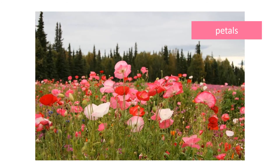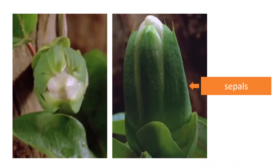It all starts with the petals. When the plant is still in bud, the petals are protected by leaf-like structures called sepals, and the petals burst through the sepals when the flower goes into bloom.